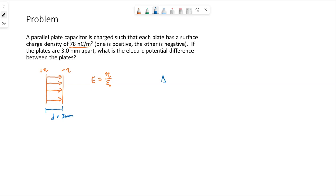So delta V, our fundamental equation relating potential difference to electric field, is delta V is the negative integral of E dot dS. Since I want the potential difference between the plates, I'm going to make my initial point the left plate, my final point the right plate, so that my delta S points with the electric field.